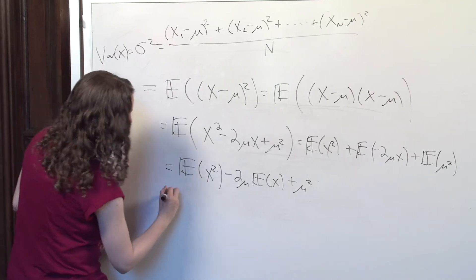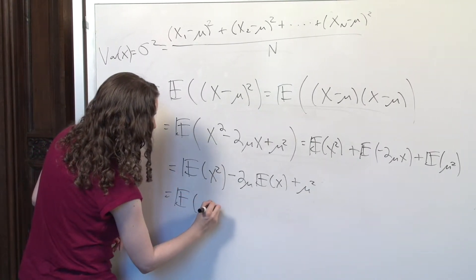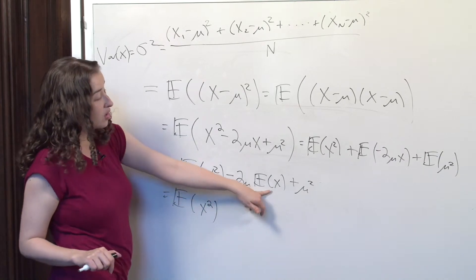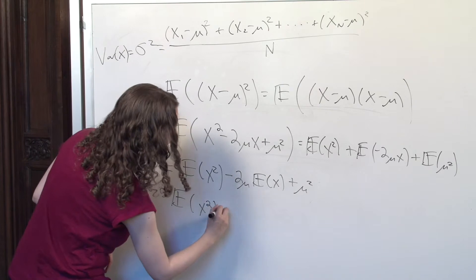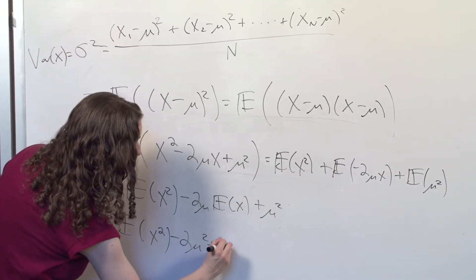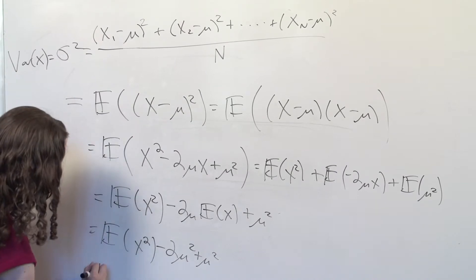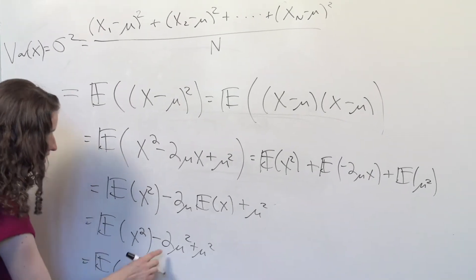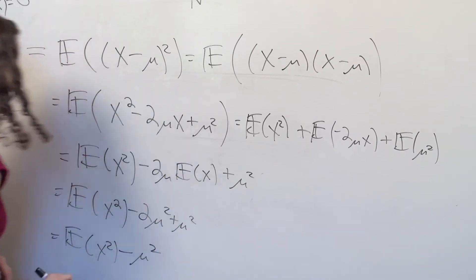We've got the expected value of x squared, minus 2 times mu. What is the expectation of x? Mu — that's just another way of writing mu. So what we have is negative 2 mu squared plus mu squared. This gives us the expected value of x squared minus 2 mu squared plus mu squared — in other words, minus mu squared.